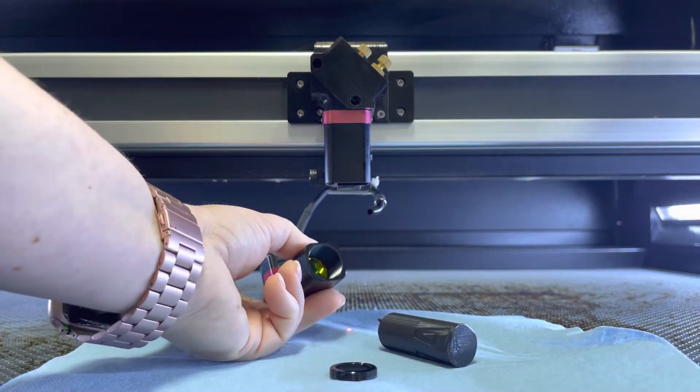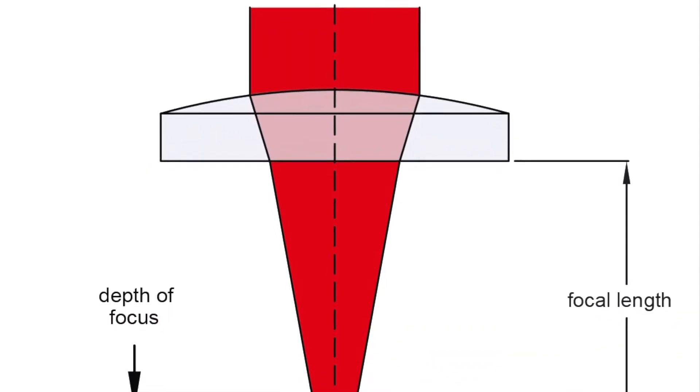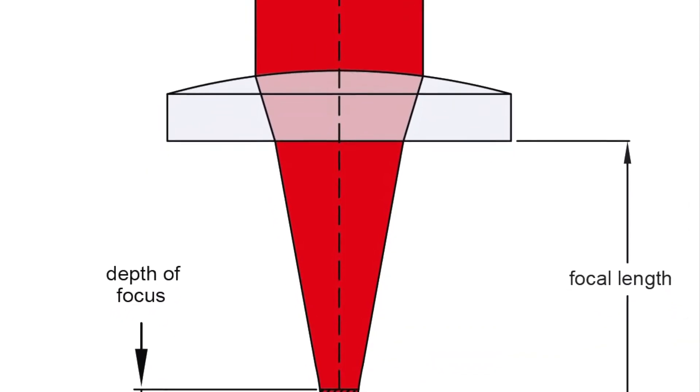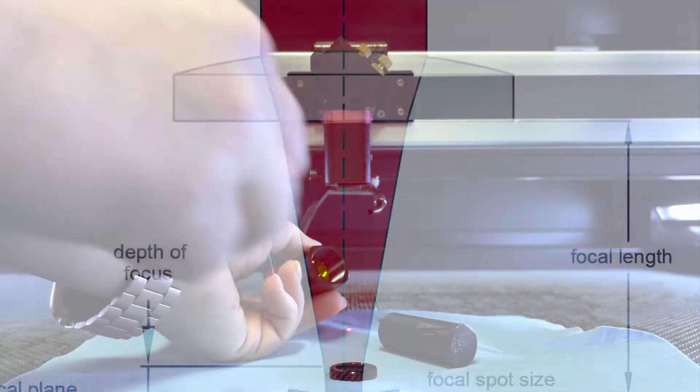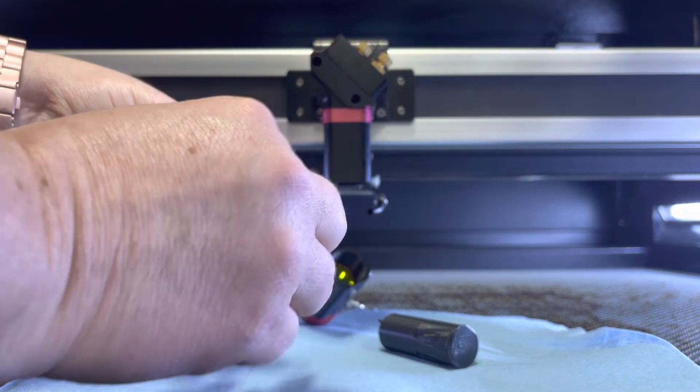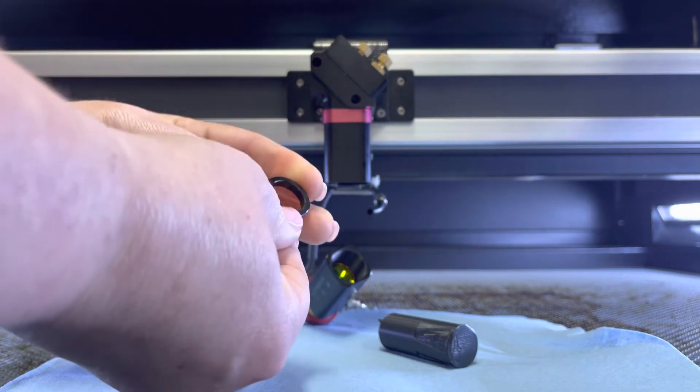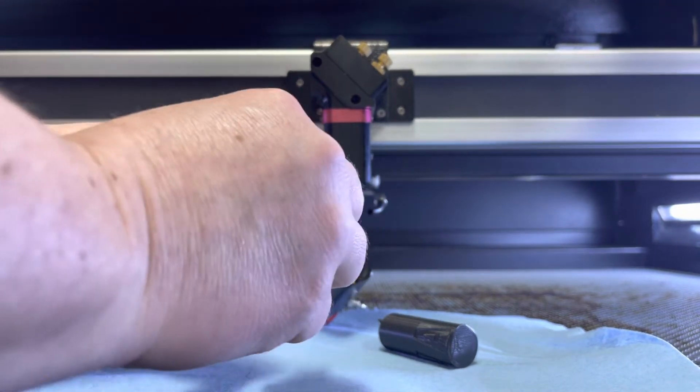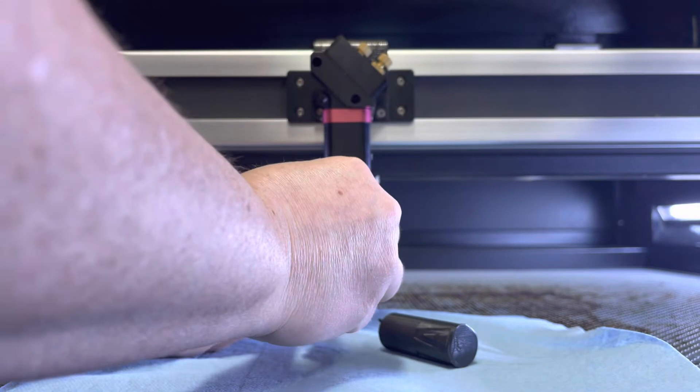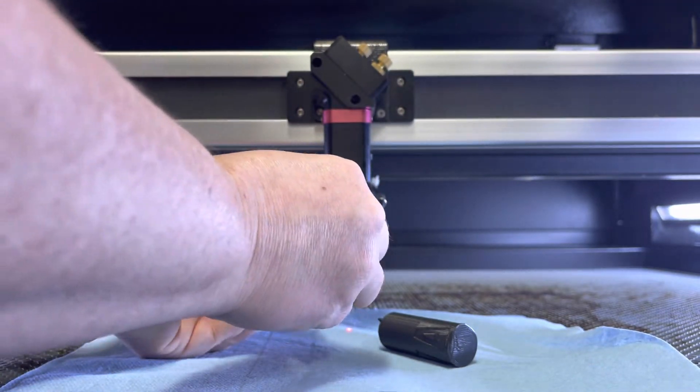So now you're ready to put it back in. You're going to put it with the convex side up, so the lens is down, convex side up, concave side down. Place that back in very carefully, and then you're ready to screw the little black piece back in to its place.